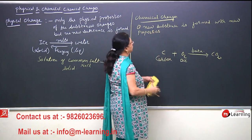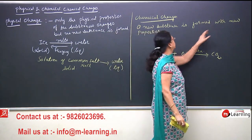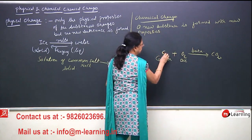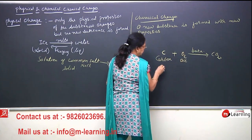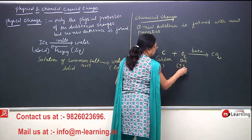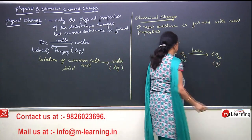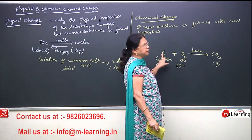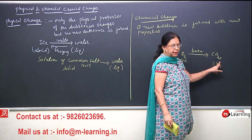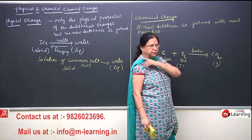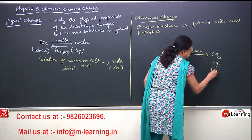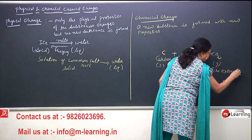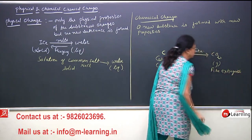A chemical change is one in which a new substance is formed with new properties. Here, carbon is solid and oxygen is a gas. When carbon combines with oxygen it forms carbon dioxide, which is also a gas. We know that oxygen is a supporter of burning, but carbon dioxide does not support burning — in fact, we use carbon dioxide in fire extinguishing to put out fires.